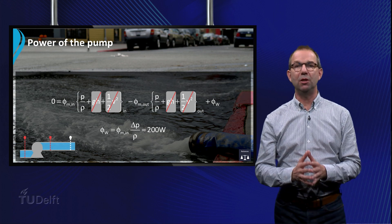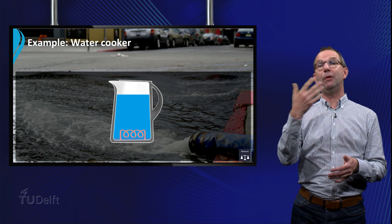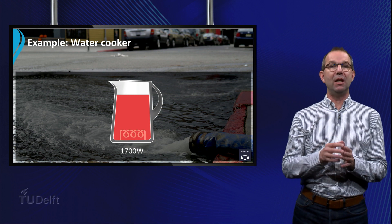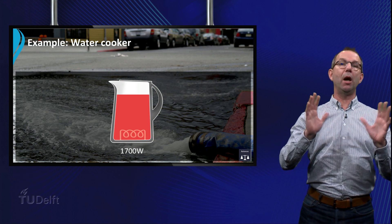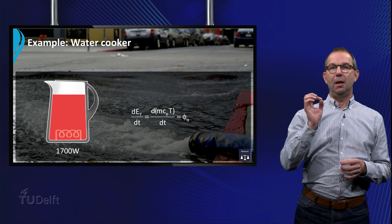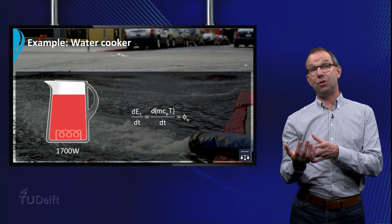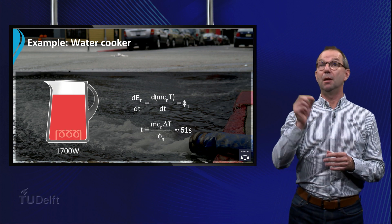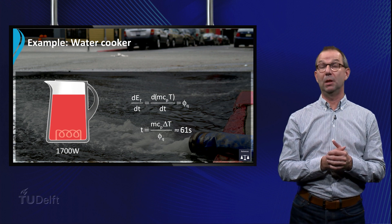Now we will give an example of how we can use only the thermal balance. Look at the water cooker: one liter of water is heated from 25 degrees Celsius to 50 degrees Celsius. How long does it take to heat this water if we have a heating element of 1700 watts? In this case we have no flows, no pump, no change in potential energy or kinetic energy. Using the thermal energy balance, with the heat capacity of water roughly constant with respect to temperature, we get: dE/dt equals the time derivative of mass times specific heat times temperature, which equals the heat flow rate. Integrating and substituting values, the heating time t equals mass of water times the temperature rise divided by the heat flow in, which is roughly 61 seconds.